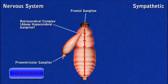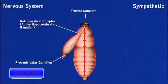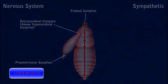The retrocerebral complex is located above the hypocerebral ganglion. It is formed of two paired masses — the corpora cardiaca and corpora allata — and related connectives. The corpora cardiaca is neurosecretory and regulates heartbeats and peristalsis of the foregut. The corpora allata produces hormones which assist in reproduction and metamorphosis.